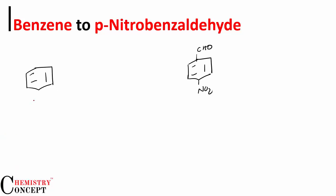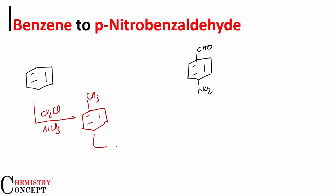How to start: Friedel-Crafts alkylation — CH₃Cl in presence of anhydrous AlCl₃ — benzene gets a methyl group. Now let's carry out the nitration, reacting with concentrated nitric acid and concentrated sulfuric acid to introduce a nitro group.